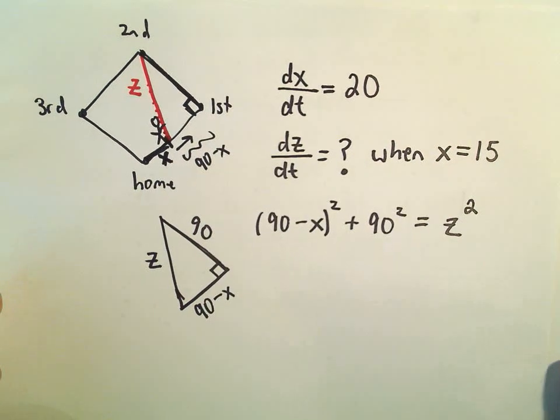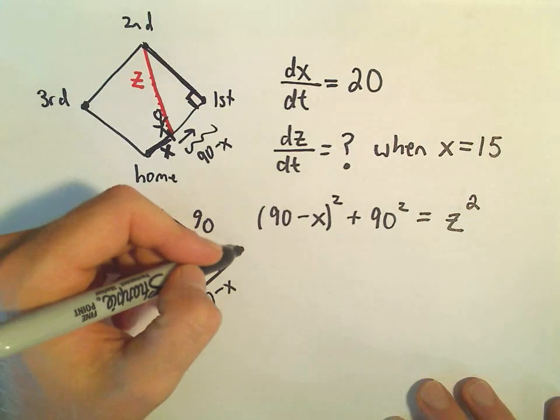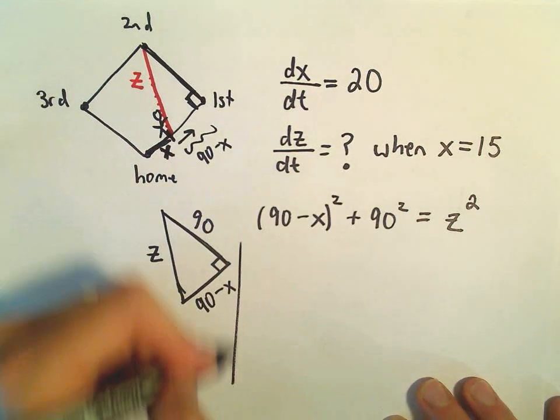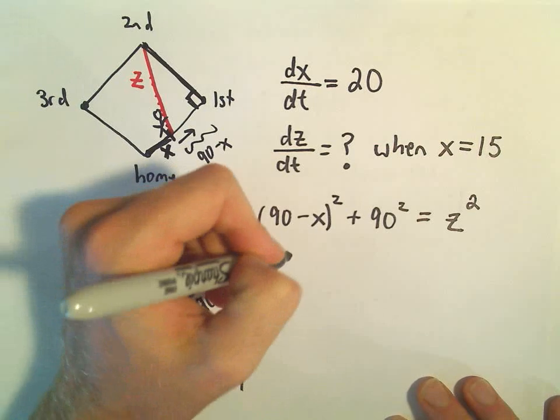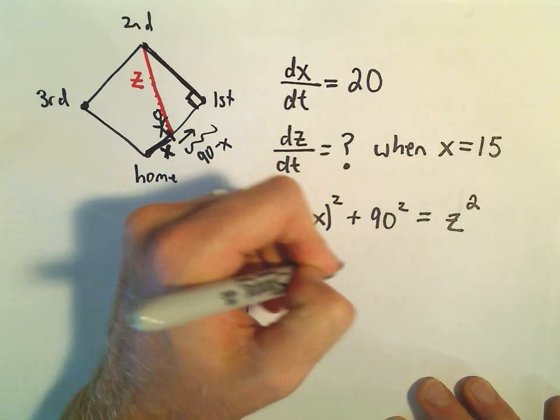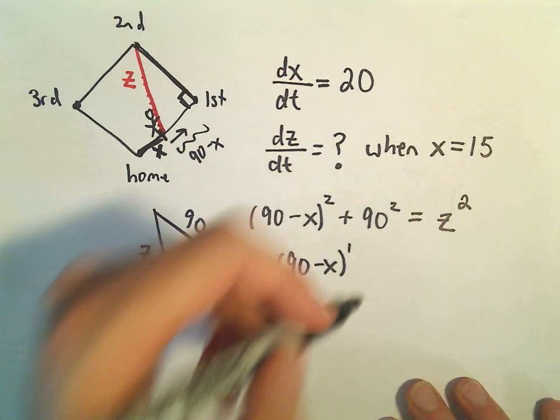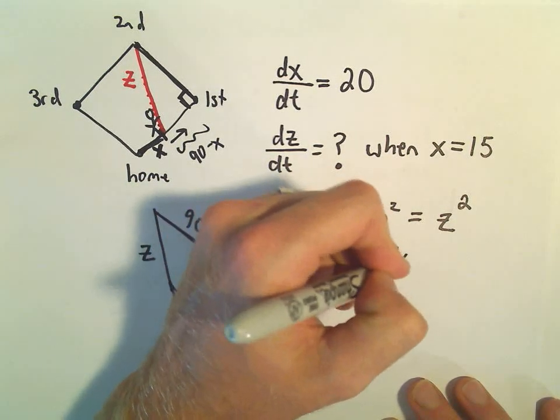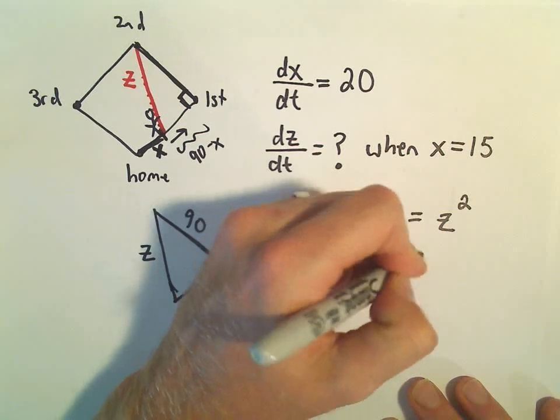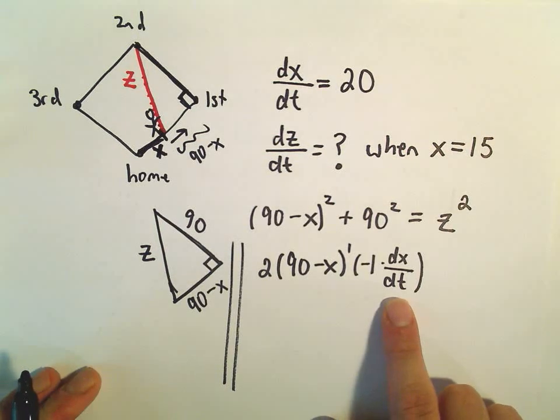And now we're going to take the derivative here with respect to time. So when we take the derivative, our 2 would come out front. We would leave the inside alone. We would have to multiply it by the derivative of the inside. So that would give us negative 1. And we have to use implicit differentiation. So negative 1 times dx/dt.